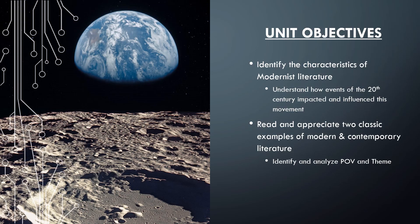In this unit, we're really looking at two central things in terms of how we identify modernist literature. The first is looking at the characteristics that really shape this genre, this new movement of literature. The big way we understand and identify those characteristics is by understanding how certain key events in the 20th century — and even the 21st century — have impacted and influenced this movement. The second thing we're going to do is read and appreciate two classic examples of modern and contemporary literature, looking particularly at point of view and theme.